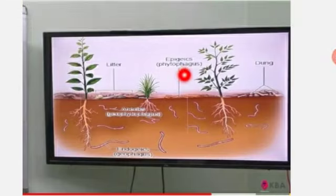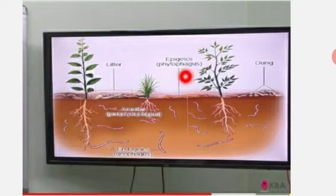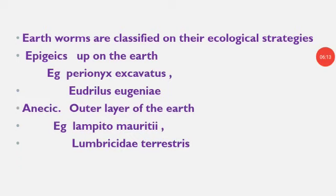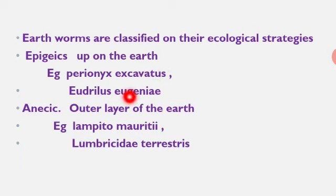Epigeic means 'upon the earth' — derived from the Greek word. These earthworms are often spotted on the soil surface after a rainstorm. They form no permanent burrows. They live and feed on decaying organic matter like leaf litter. Examples: Perionyx excavatus (Indian blue worm) and Eudrilus eugeniae.